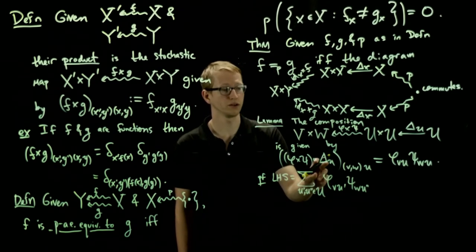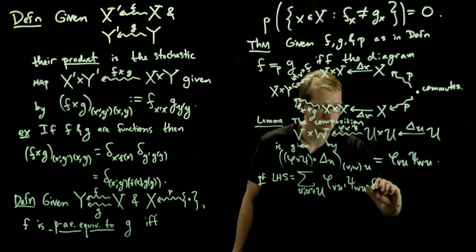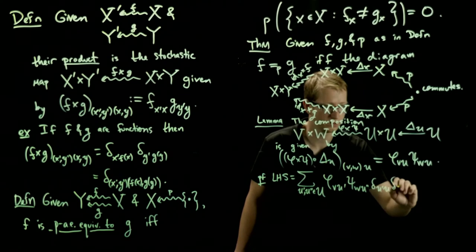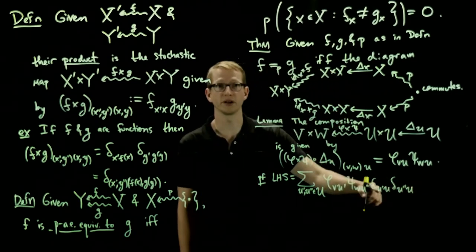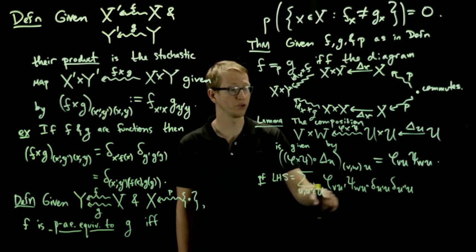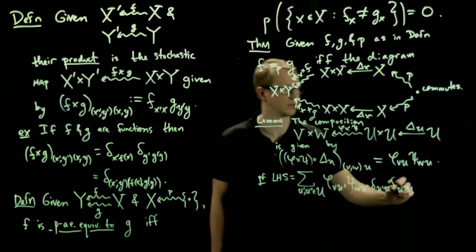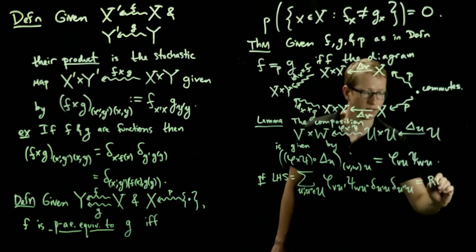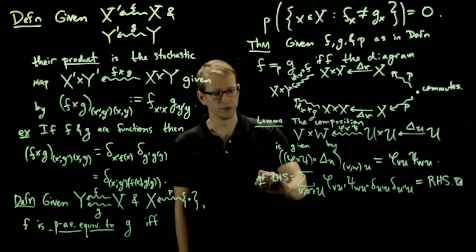Using the coordinate u and u'' and u'. So it's δ_u'u, δ_u''u. So this gives us two delta functions, and we have a summation over those. And as a result, these two letters coincide. So this is exactly the right-hand side. Quick and simple proof. So this is the proof of the lemma.